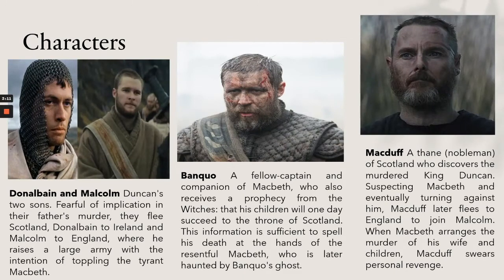Donalbain and Malcolm are Duncan's two sons. Fearful of implication in their father's murder, they flee Scotland — Donalbain to Ireland and Malcolm to England, where he raises a large army with the intention of toppling the tyrant Macbeth. Banquo is a fellow captain and companion of Macbeth who also receives a prophecy from the witches that his children will one day succeed to the throne of Scotland. This information is sufficient to spell his death at the hands of a resentful Macbeth, who is later haunted by Banquo's ghost.